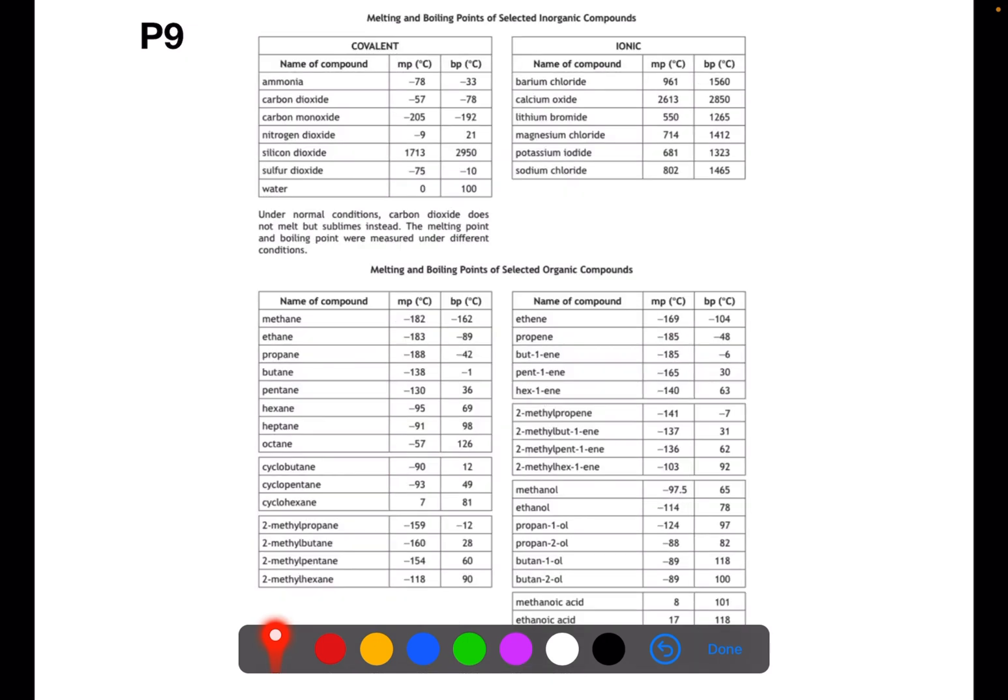Page nine has some melting and boiling points of different compounds and it's also useful for when you're looking at hydrocarbons. So here in this box we have the alkanes and they're written in order. So if you find it difficult to remember how many carbons are within each of the alkanes you can have a look here where you've got methane with one, ethane with two and so on. You also have the cycloalkanes and the alkenes.